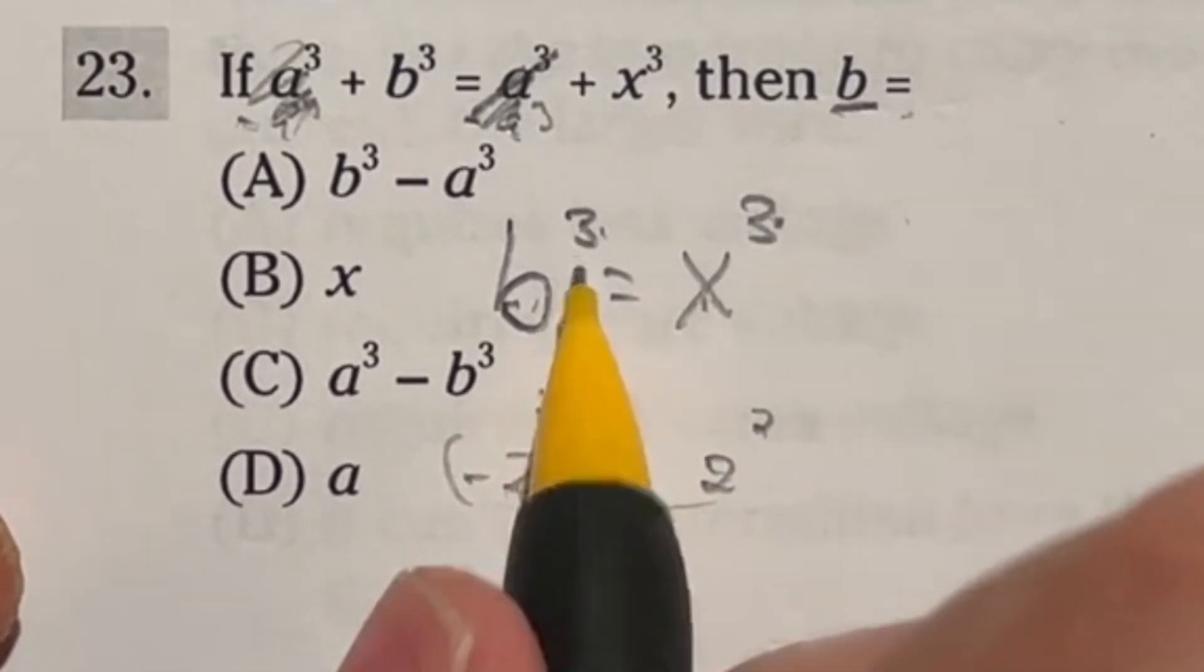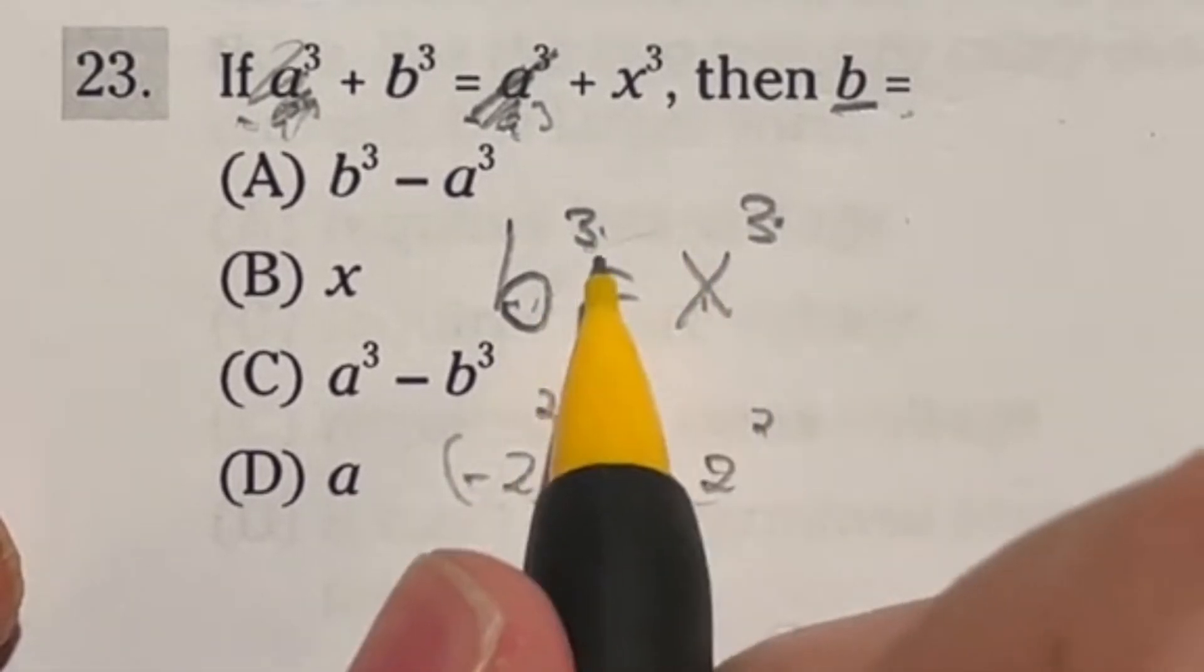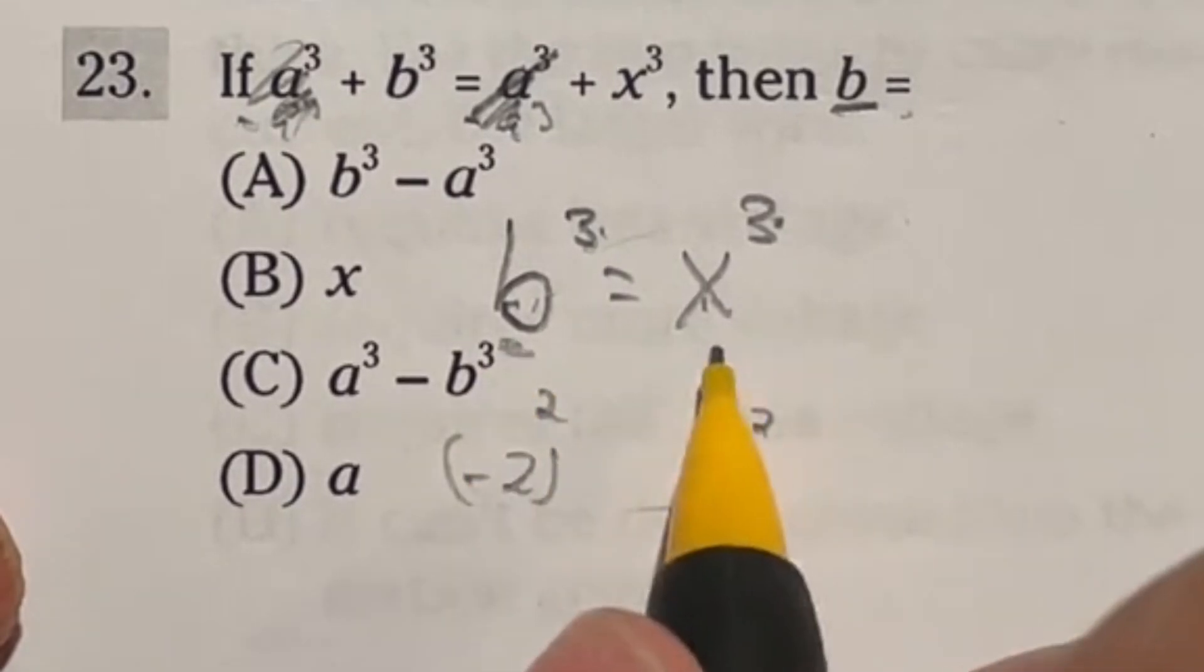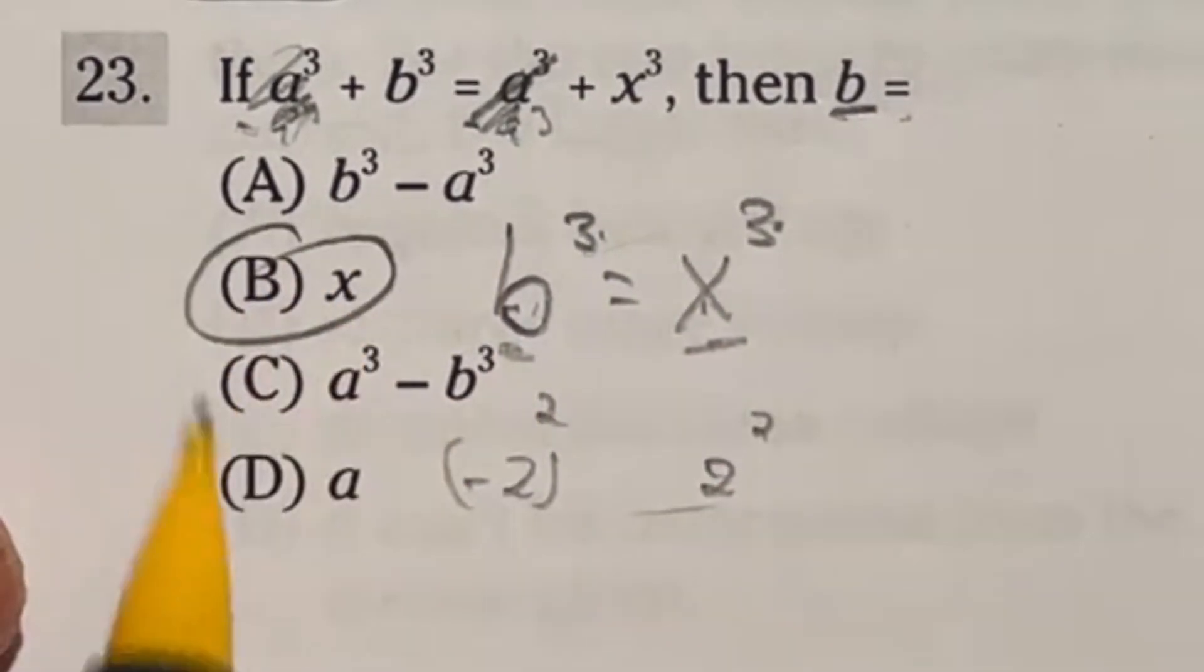But in this case, because it's an odd power, it maintains if it's negative or positive. So that means that this number must be the same as this number. So therefore, b must be equal to just x, which is answer b.